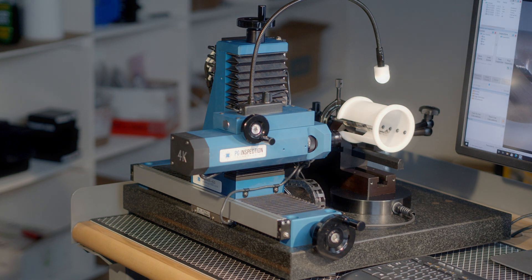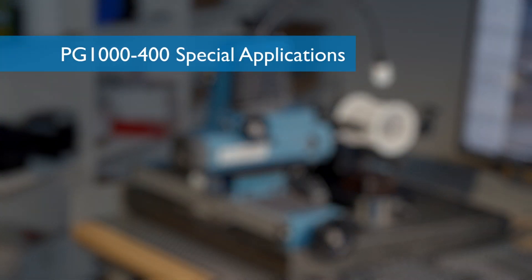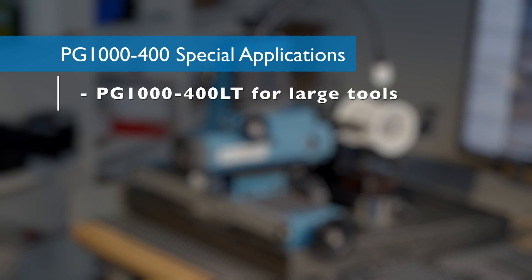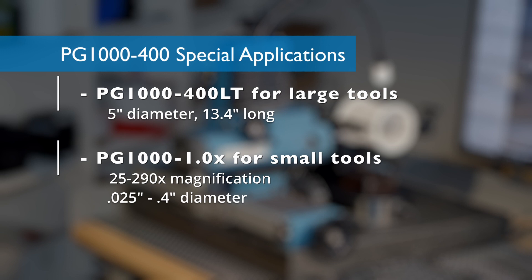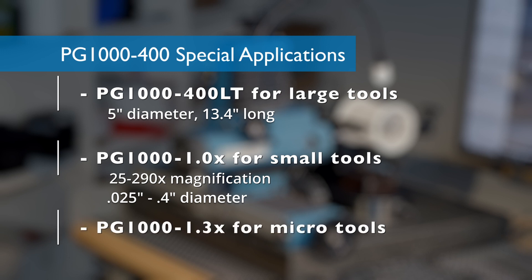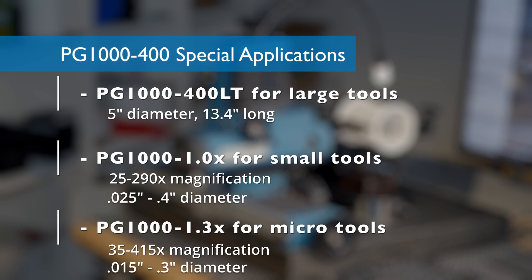In addition to differences in tool size, magnification level, and encoder count, there are a few variations on the PG-1400 which allow for specialty applications. There's a PG-1400 LT with a larger granite base and taller column that allows larger tool inspections up to 5 inches in diameter or up to 13.4 inches long — the standard 400 will measure tools up to 3 inches in diameter or up to 7.5 inches long. The PG-1000 1.0X option offers 25x to 290x magnification, allowing you to inspect small tools between 25 thousandths of an inch and 4 tenths of an inch in diameter. There's also a PG-1000 1.3X option with 35x to 415x magnification for micro tools between 15 thousandths and 3 tenths of an inch in diameter.